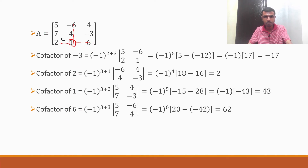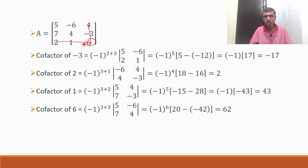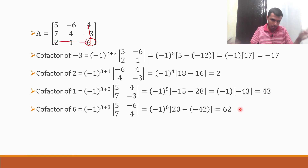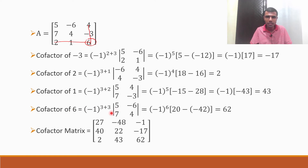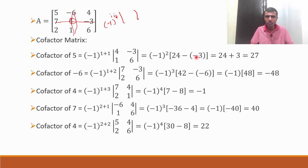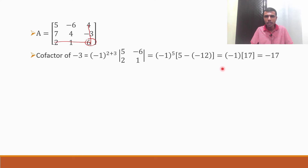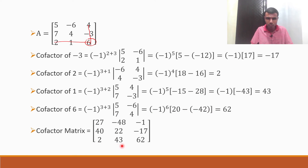Cofactor of 6 at position (3,3): (-1)^(3+3) × det[5, -6; 7, 4] = (+1)(5×4 - 7×(-6)) = 20 - (-42) = 20 + 42 = 62. Now, writing down all the cofactors as the cofactor matrix: [27, -48, -1; 40, 22, -17; 2, -43, 62].